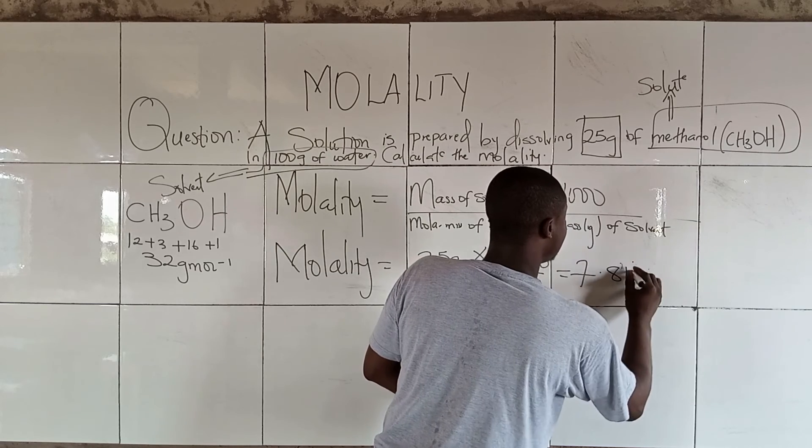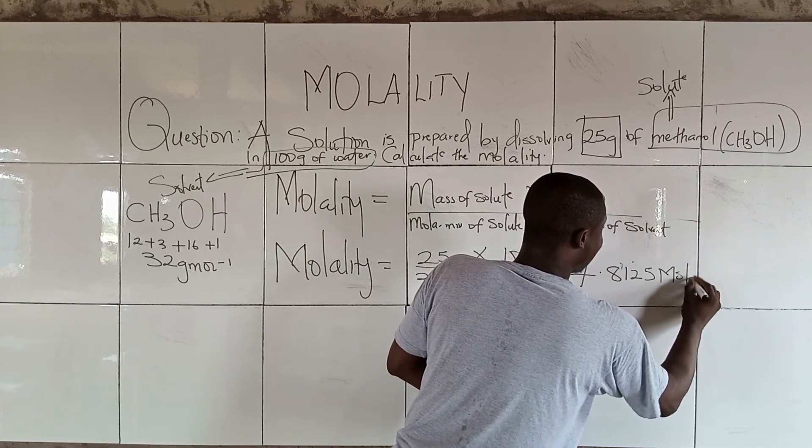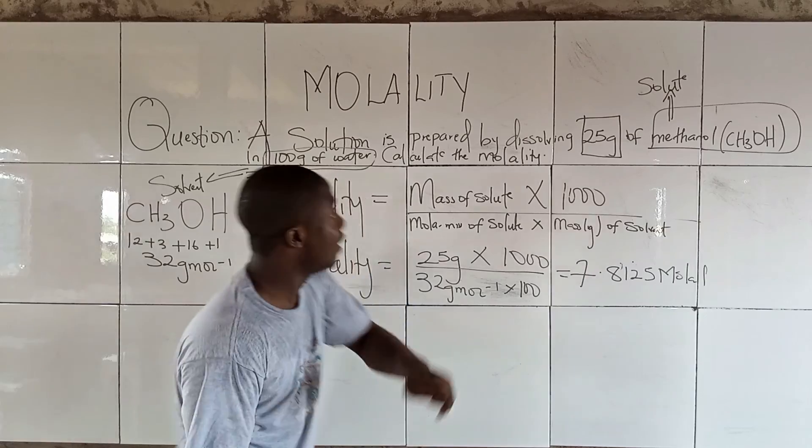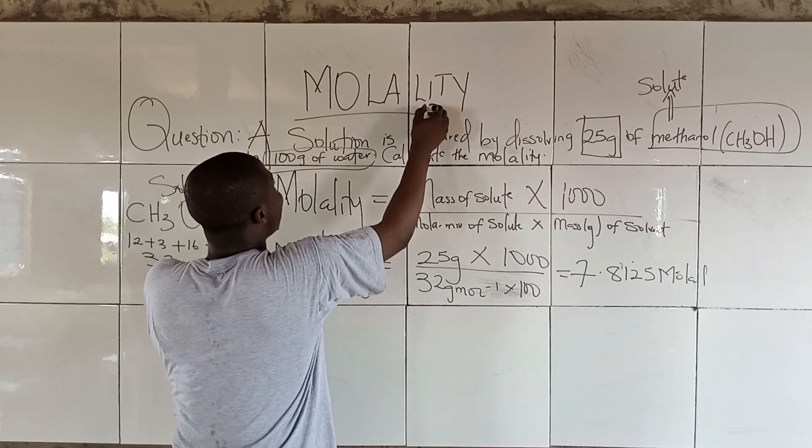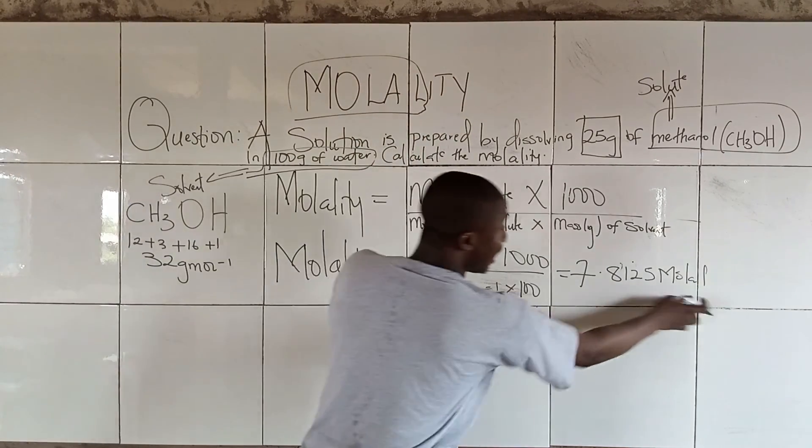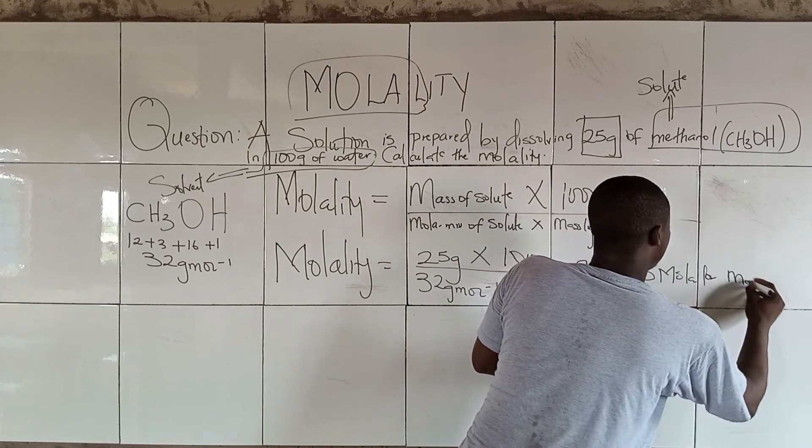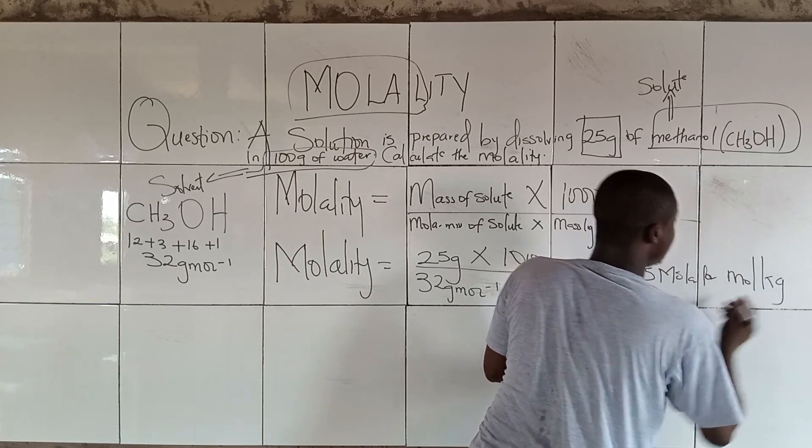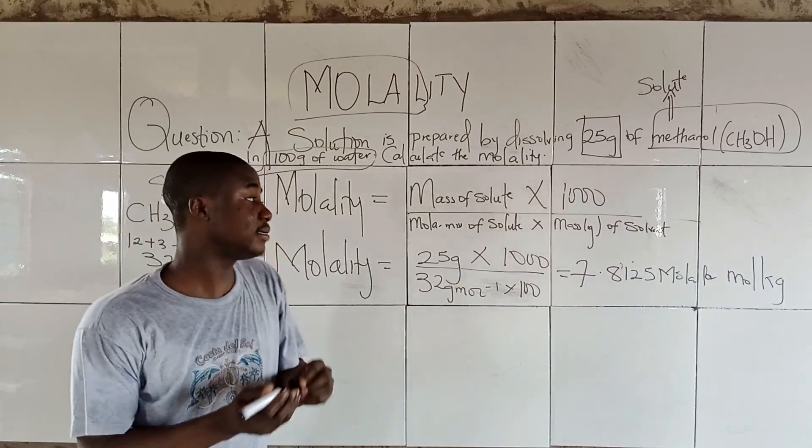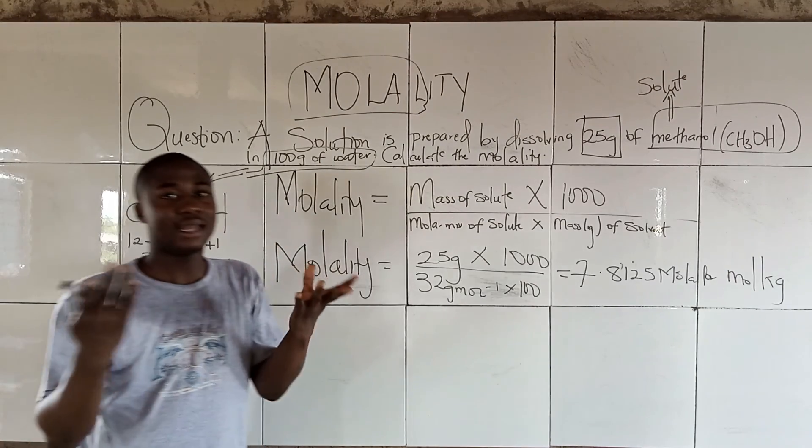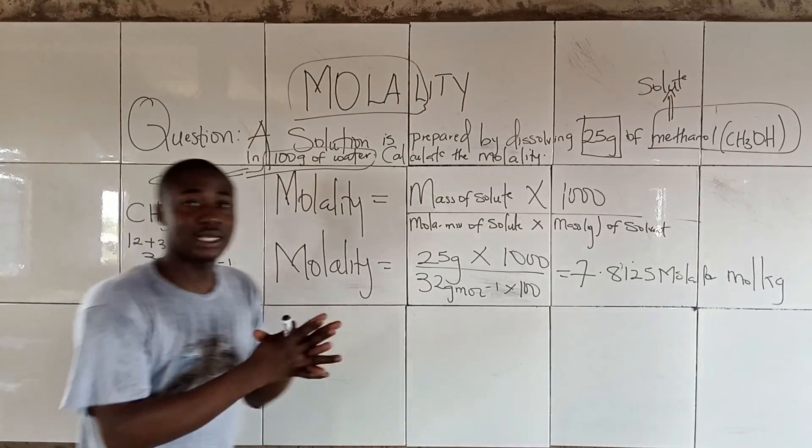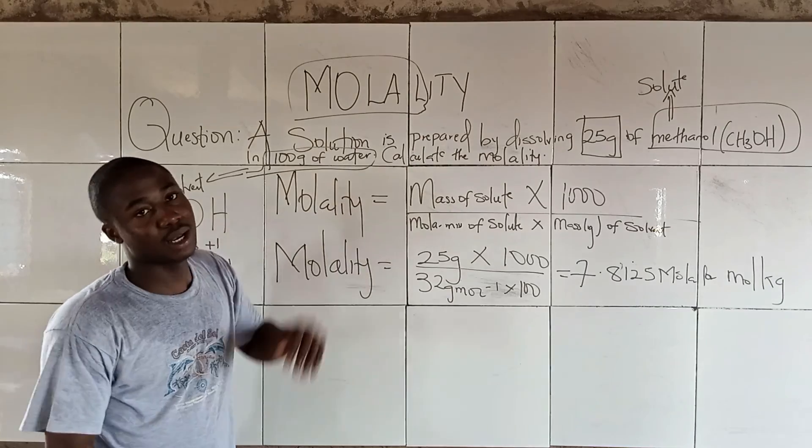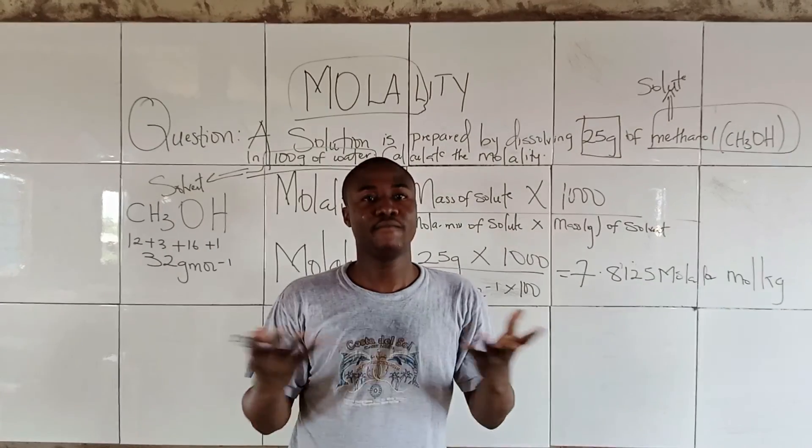This equals 7.8125 molal, not molar, because you can see it is molality. So it is molal. So this is the solution for molality, and I believe now we understand the concept about molality.